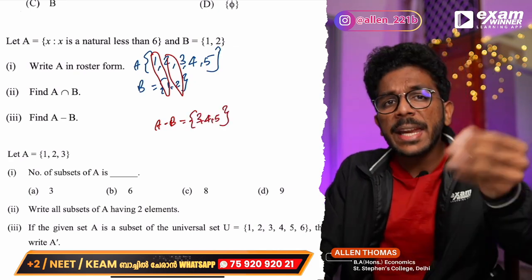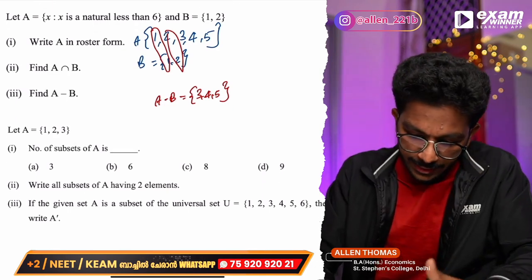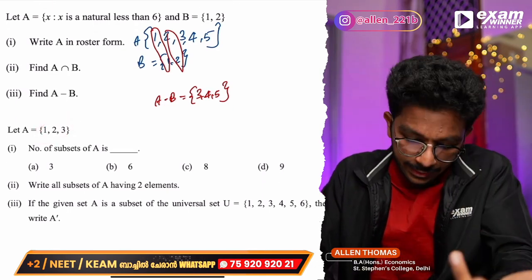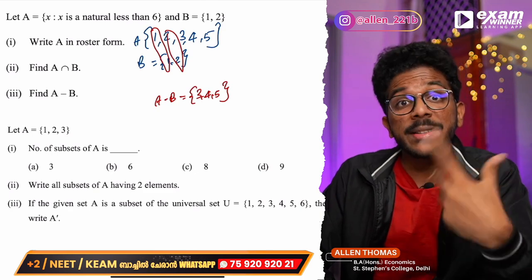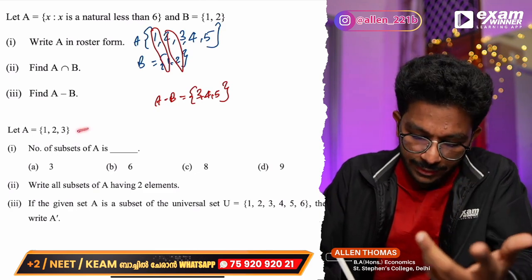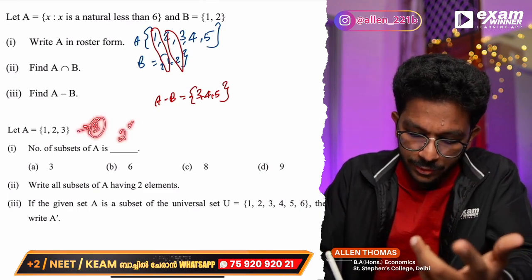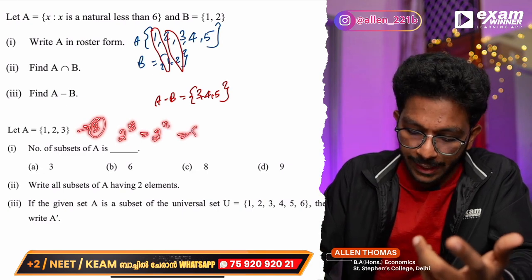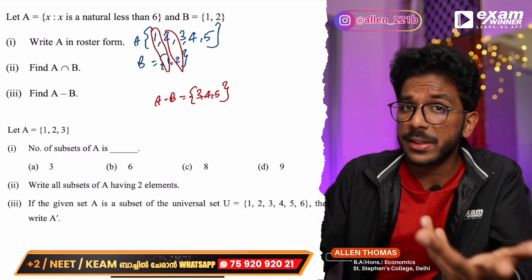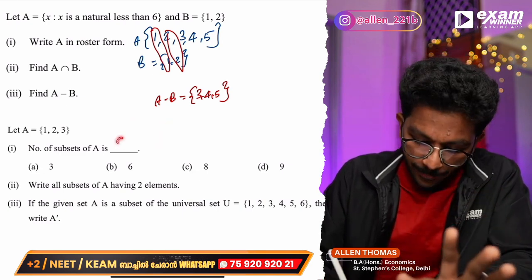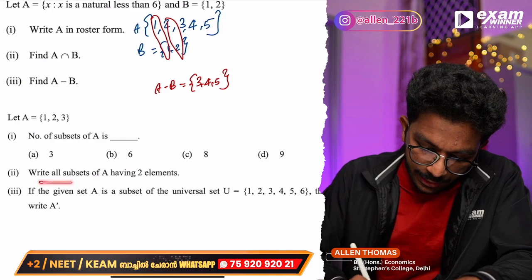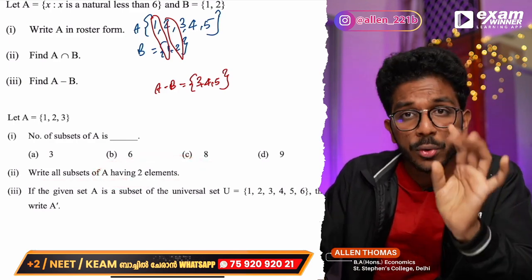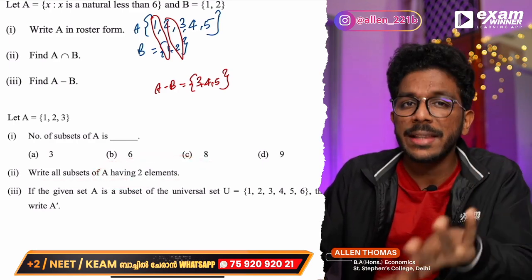Next: A = {1, 2, 3} and the number of subsets in the power set. Using the formula 2^n where n = 3, 2 raised to 3 = 8. So 8 is the number of subsets. Write all subsets having 2 elements: {1,2}, {2,3}, {1,3}.